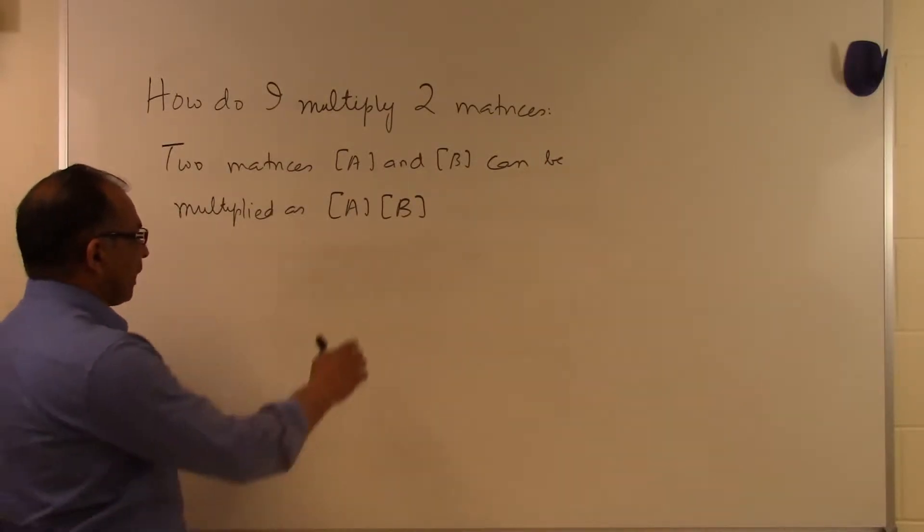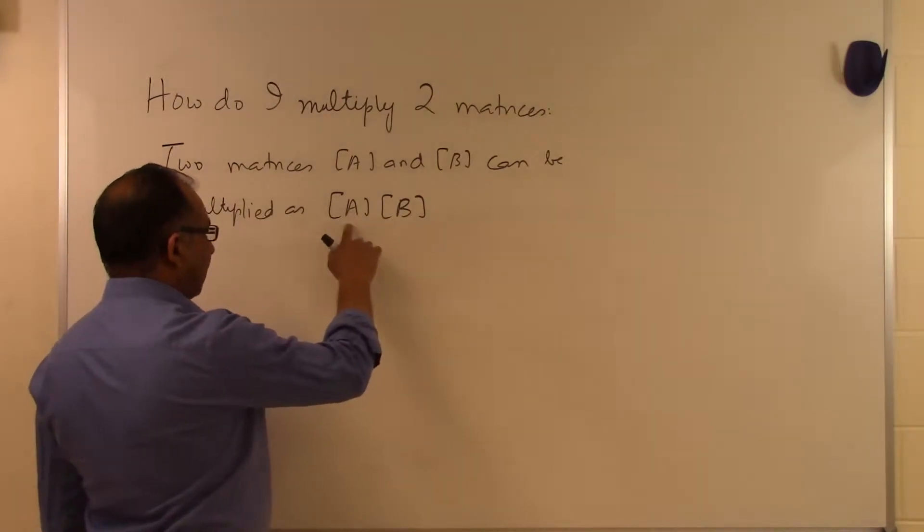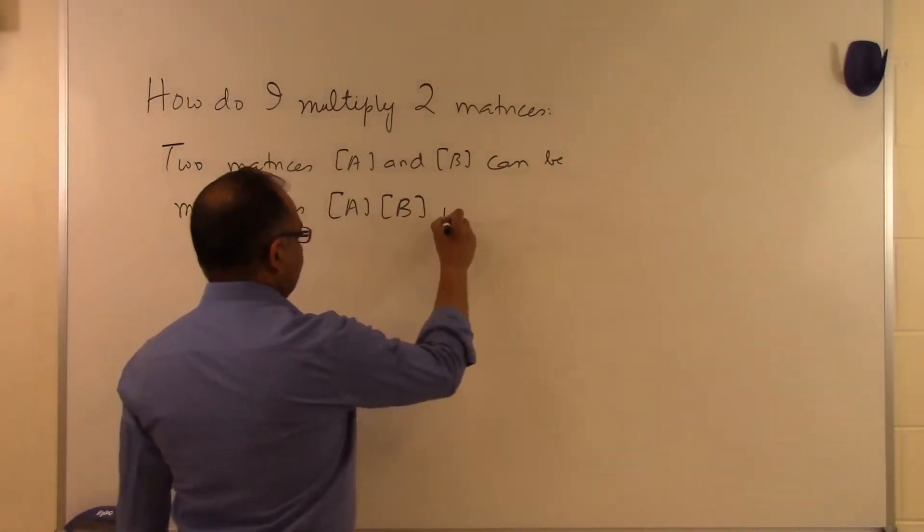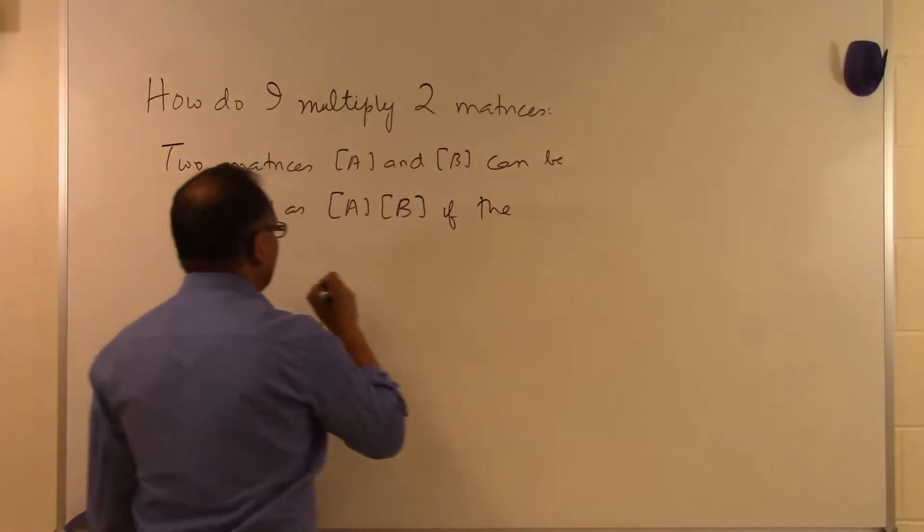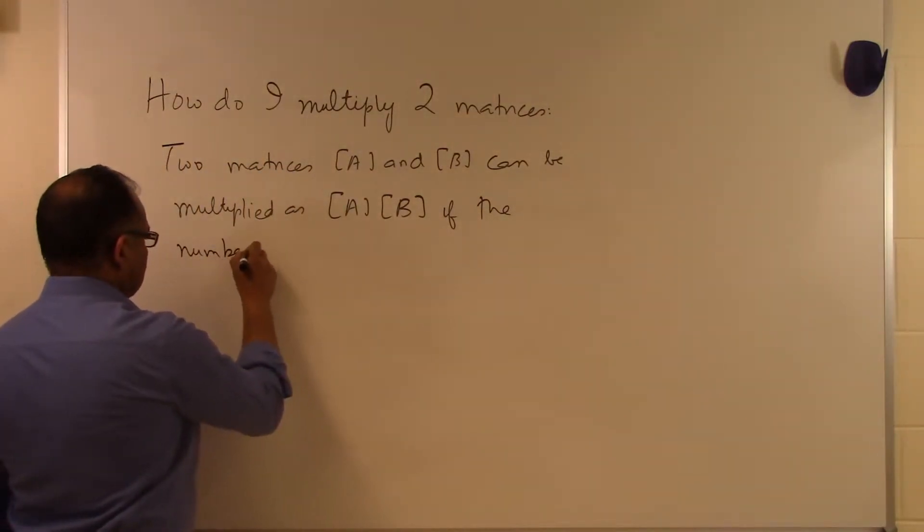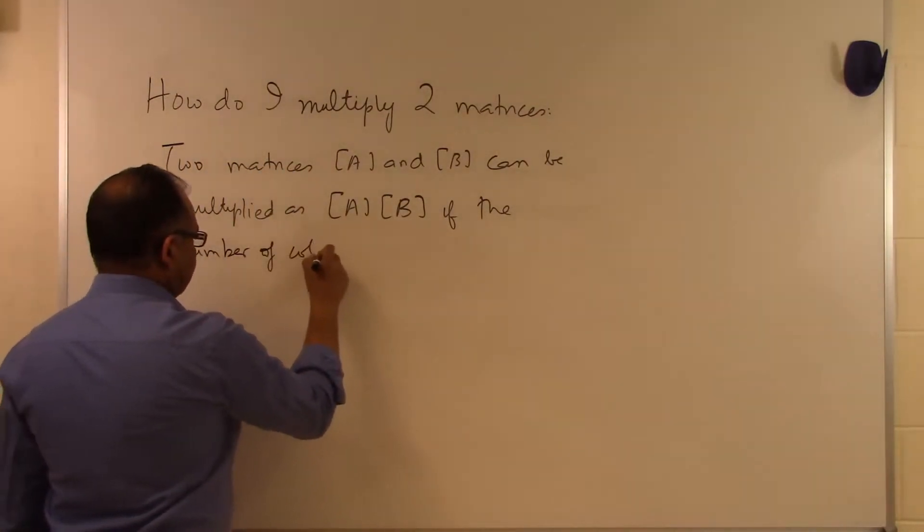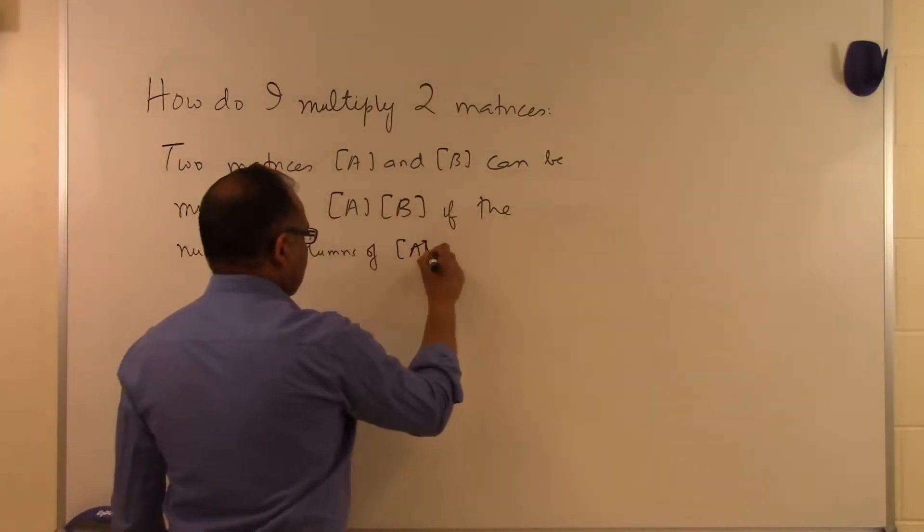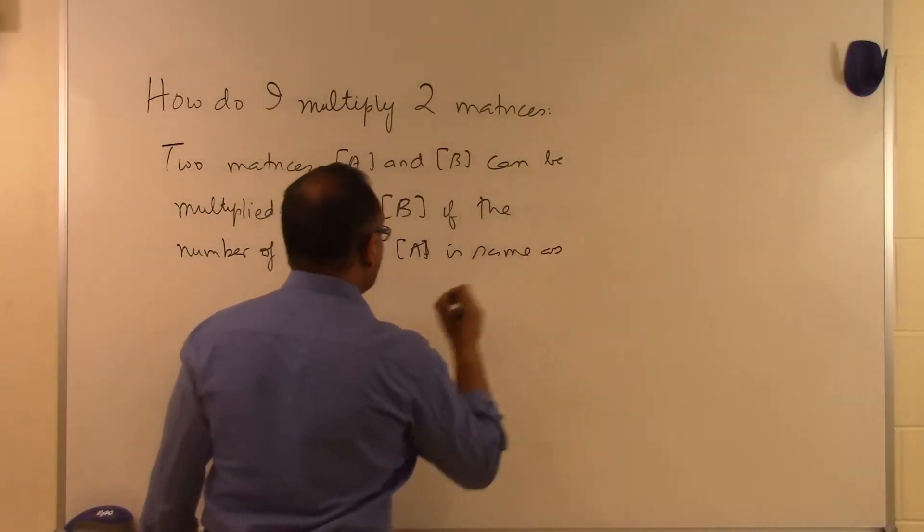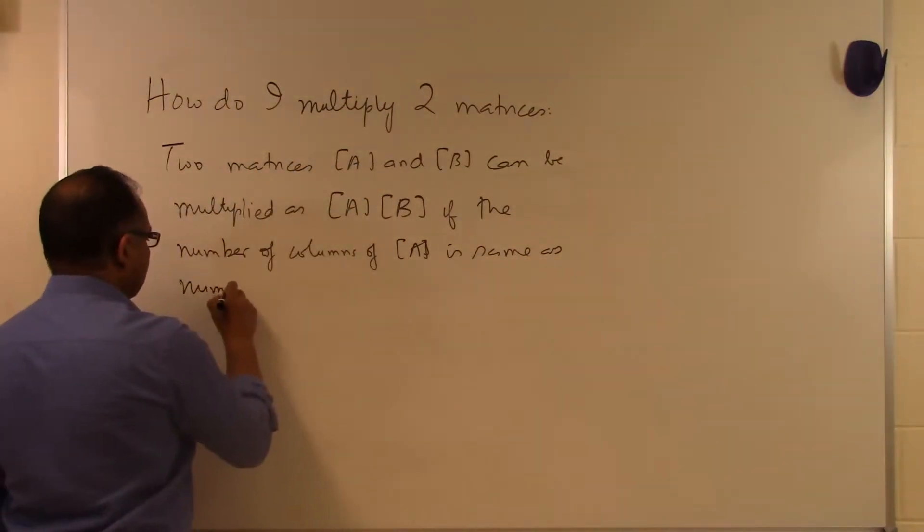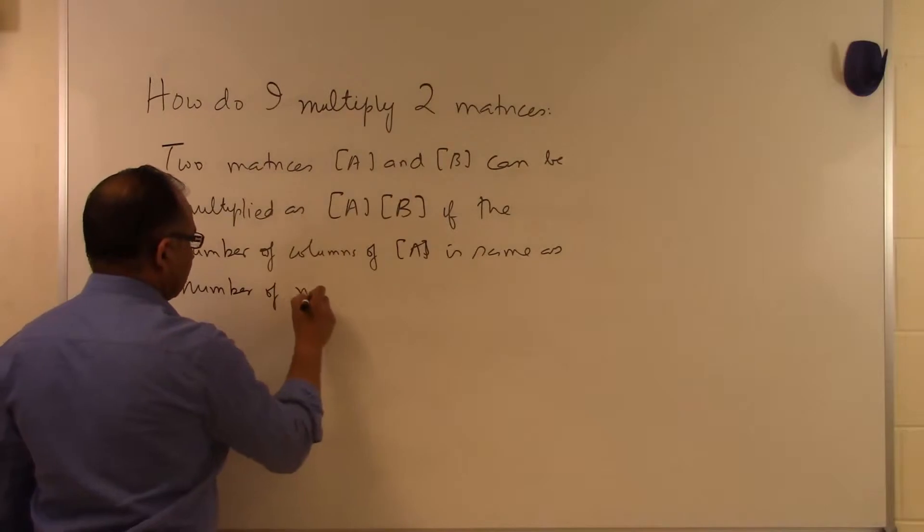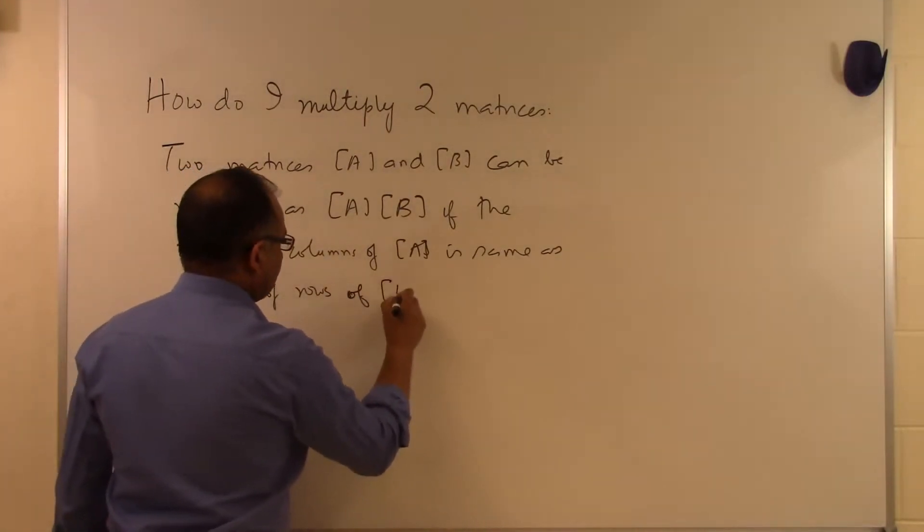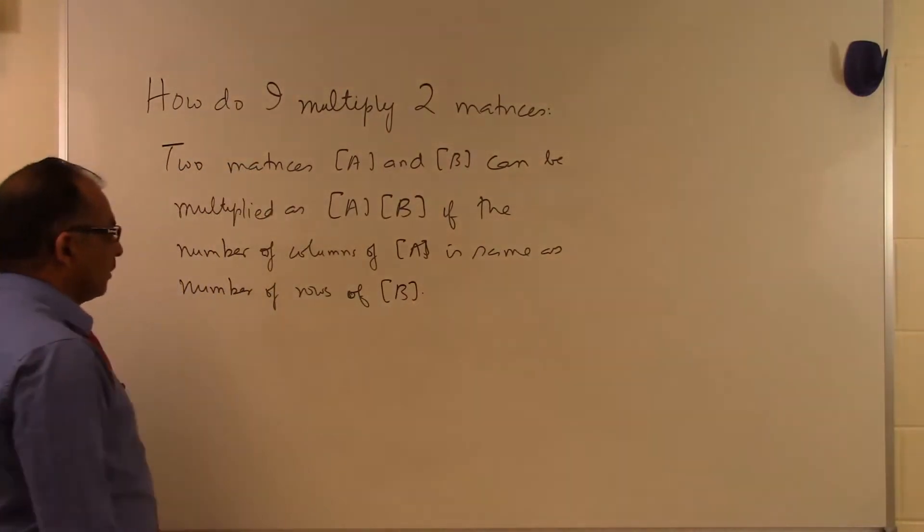Under what circumstances can we multiply A by B? If the number of columns of A is the same as the number of rows of B. Only if the number of columns of A is the same as the number of rows of B can they be multiplied.